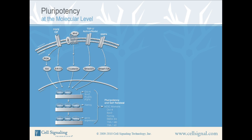Pluripotency at the Molecular Level. At the molecular level, the predominant signaling pathways involved in human ESC pluripotency and self-renewal are TGF-beta, which signals through SMAD2 and 3, and FGFR, which activates the MAPK and AKT pathways.